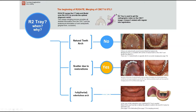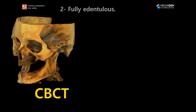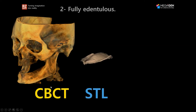What about fully edentulous cases? Can we use the standard R2 tray in these cases? The challenge in fully edentulous cases is that there is really no reference for the matching between the CBCT and the STL file or the model of the patient.